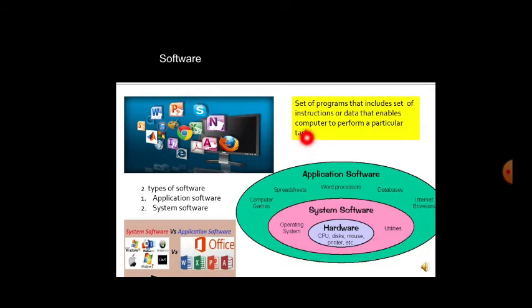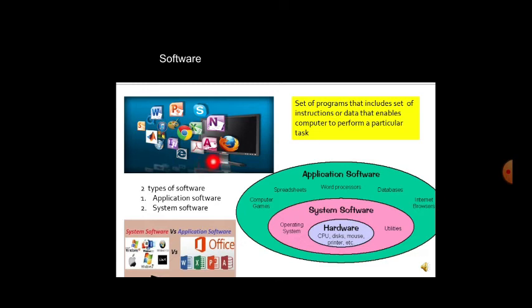Software is a set of programs, instructions, or data that enables a computer to perform a particular task. Hardware devices cannot be instructed directly; we need software — a set of instructions given to the computer. There are two types of software: application software and system software. Application software includes spreadsheets, computer games, word processors, databases, and internet browsers.